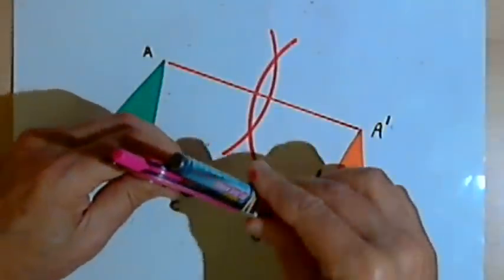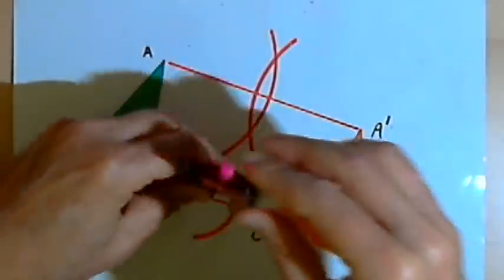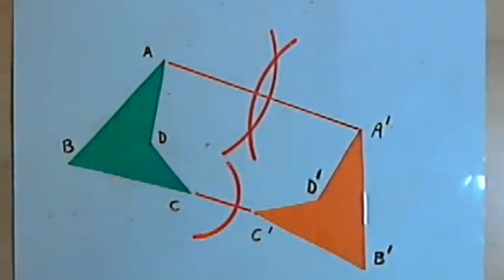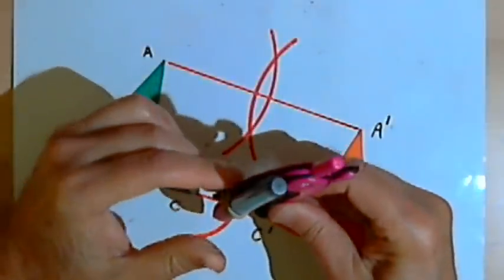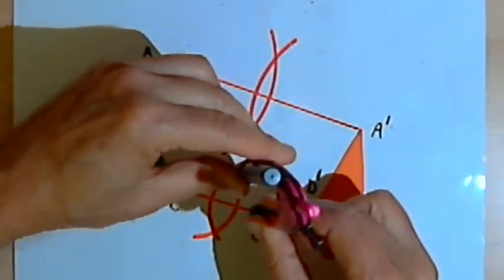Then I can change my compass setting for C. I'll move over to C and draw an arc over here. And keeping the compass setting the same as the one I just used, I'll move over to C prime and draw another arc.